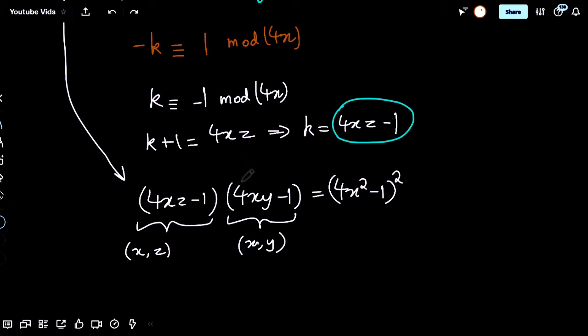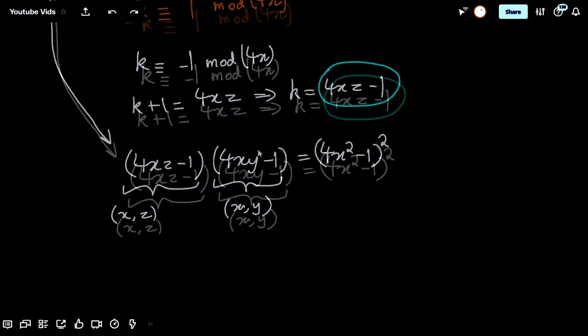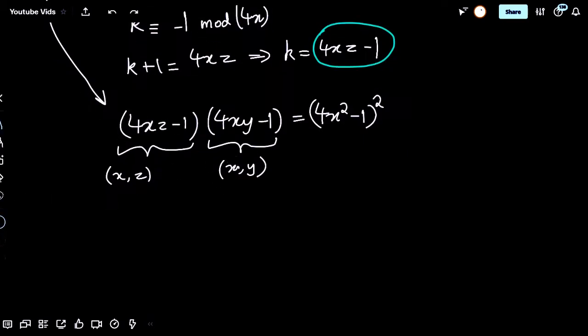Since we're looking for a contradiction, it is obvious that this leads towards the method of infinite descent. And in infinite descent, we look at the size of the numbers. So perhaps we should focus on the cardinality, sorry, the size of x, y, and z, how big they are. We can do that with some bounds.